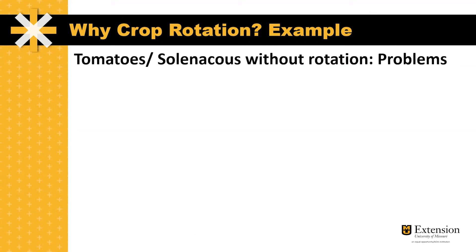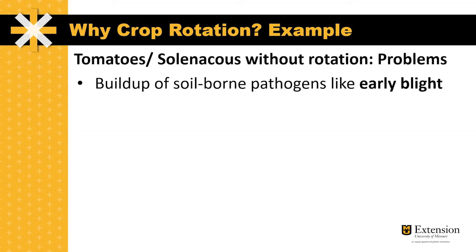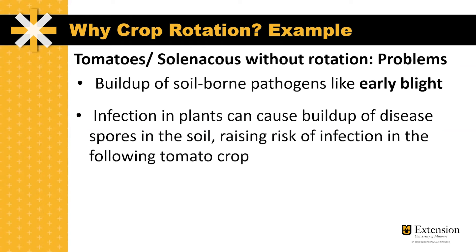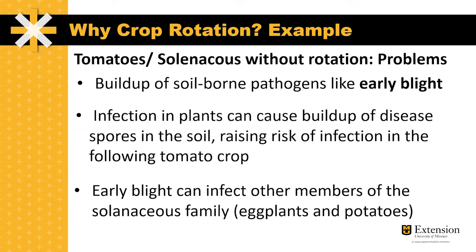Some problems with planting tomatoes or other solanaceous crops in the same part of the field year after year could include soil-borne pathogens like early blight. Infections in these plants can cause a buildup of disease spores in the soil that can raise the risk of infection in the following tomato crop. It's important to note that early blight can affect other members of the solanaceous family, including eggplants and tomatoes.